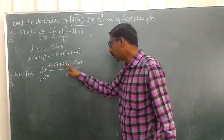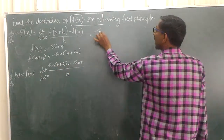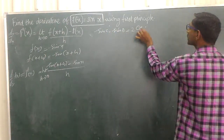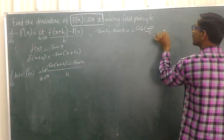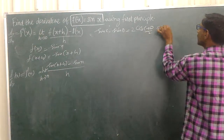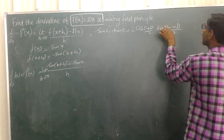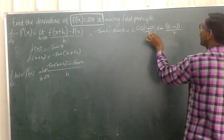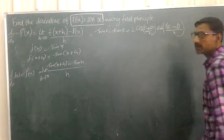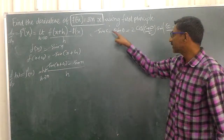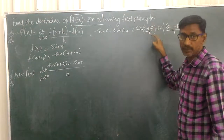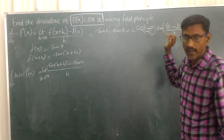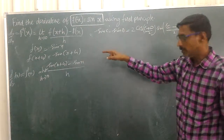The numerator is in the form of sin C minus sin D. So we apply: sin C - sin D = 2 cos((C+D)/2) · sin((C-D)/2). Substituting here with limit h tends to 0.